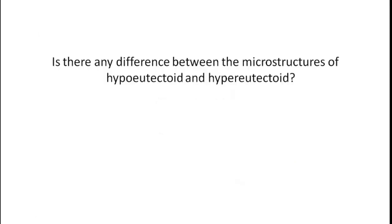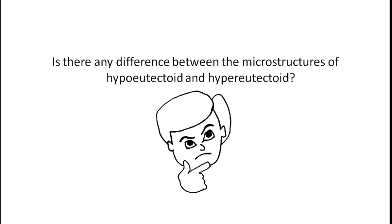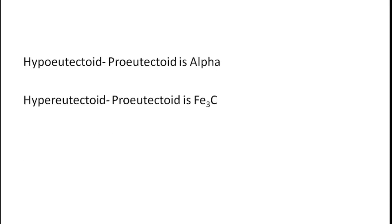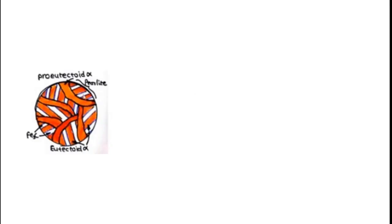The question is: is there any difference related to the microstructure observed in these two zones? The answer is yes. If you have understood the iron-iron carbide diagram, you would say that the hypo eutectoid zone has pro eutectoid alpha in the microstructure, whereas the hyper eutectoid zone has Fe3C as pro eutectoid.